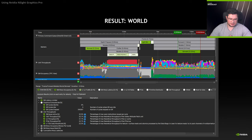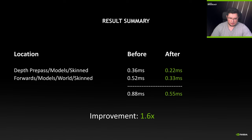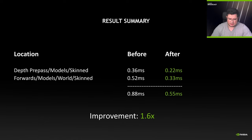The same is also true for the section on the right. You may also notice that the unit throughput section shows higher numbers, which is good. If we compare before and after the change — replacing a divergent constant buffer access with a divergent structured buffer access — we get a total 1.6x speedup for those two specific areas.